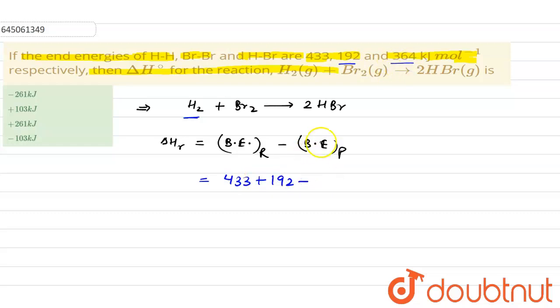Now on further solving, it will be 433 plus 192 minus 2 times 364, which equals 625 minus 728.